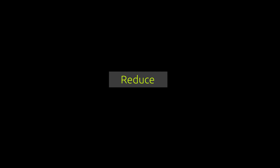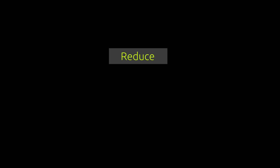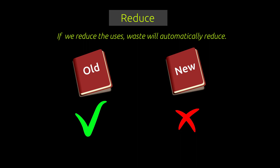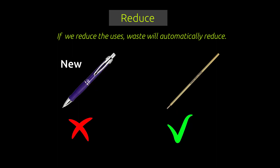If we reduce the uses, waste will automatically reduce. Some things are necessary for life and cannot be avoided. For example, books are necessary to study but we can minimize the use of them. Instead of buying new books, we can use old books. Instead of changing a pen, we can buy only refills.